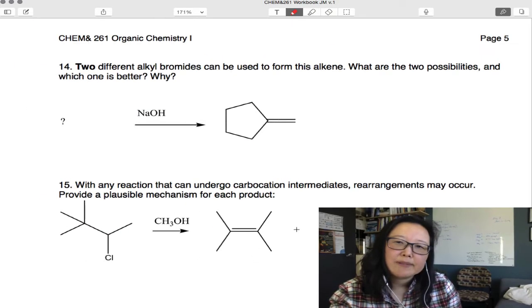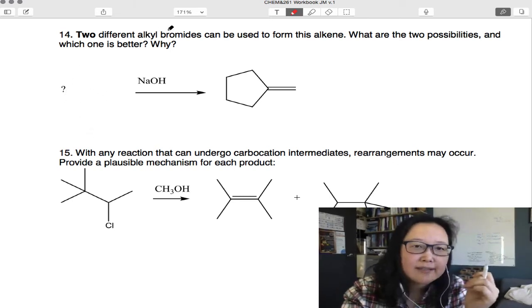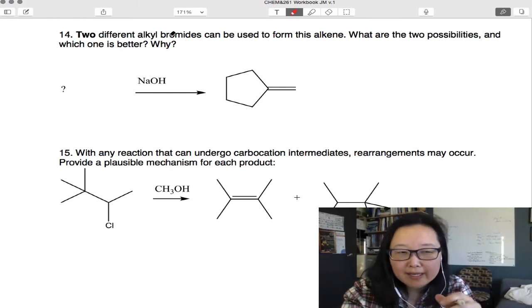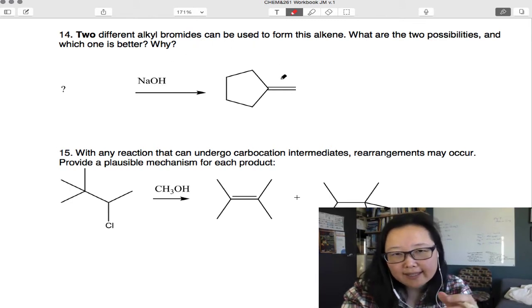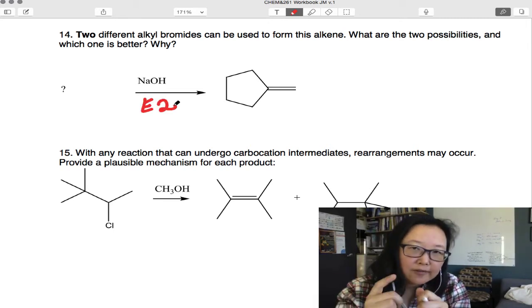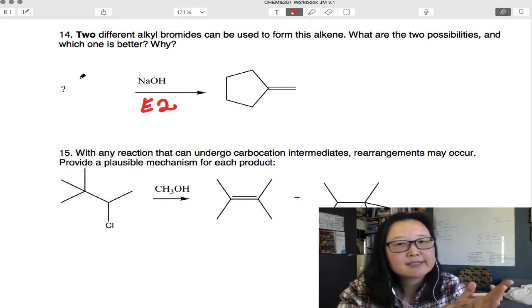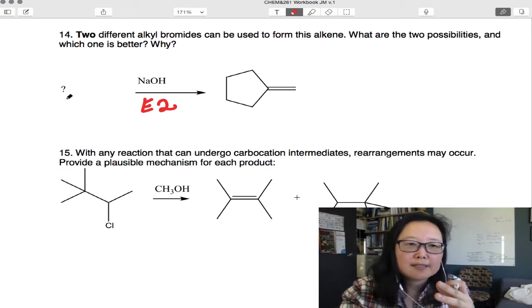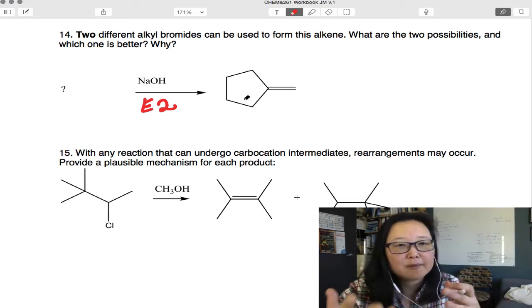Here are a couple more problems. Go ahead and try these together. First, think of what starting alkyl halide you can use. And they say use an alkyl bromide. So what molecule would you have to start with if it had a bromine on it as your leaving group in order to treat it with NaOH to get this alkene? So this is a strong base. So is that E1 or E2? This is an E2 reaction. But in any case, you still use the concept that the beta hydrogens are taken off and the leaving group leaves and make an alkene. So see what two possible structures you could start with to get this, and one of those possibilities is going to be better than the other.